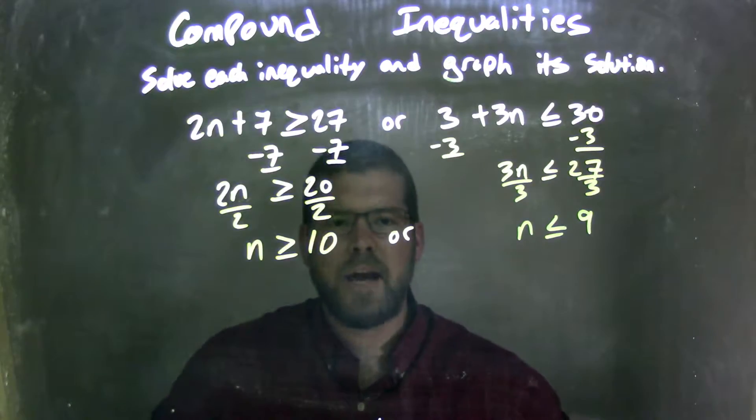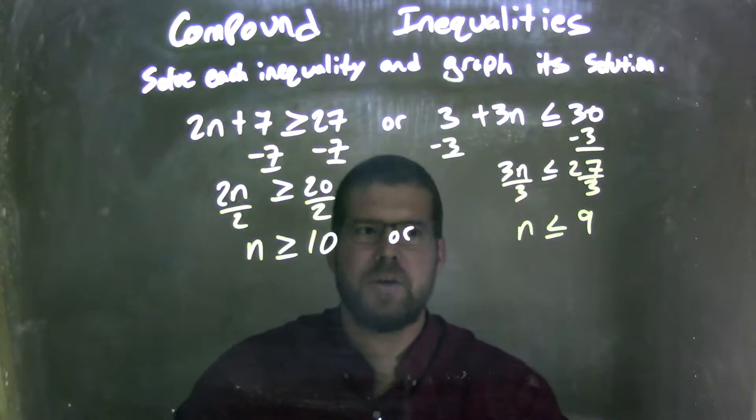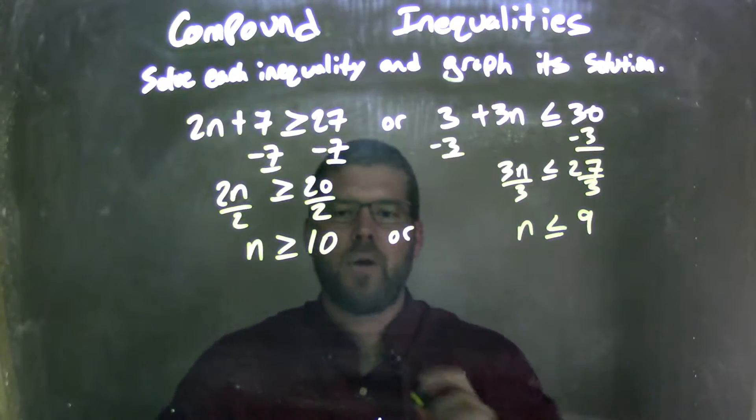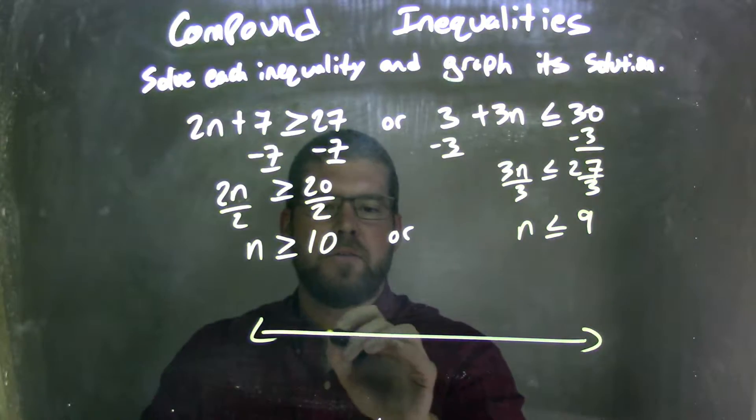n is greater than or equal to 10, or n is less than or equal to 9. Okay, we have our two ors here, our two possibilities. So I need to graph them. So, let's go to the number line here, and let's put 0 right here.